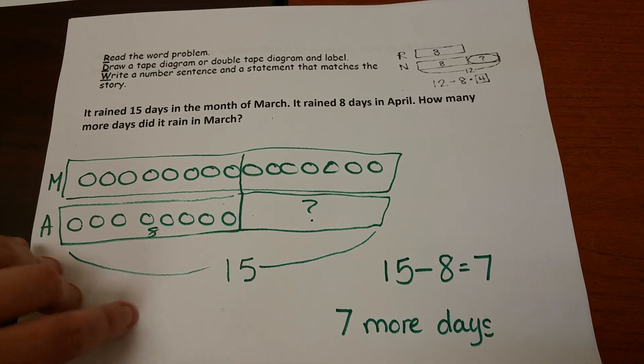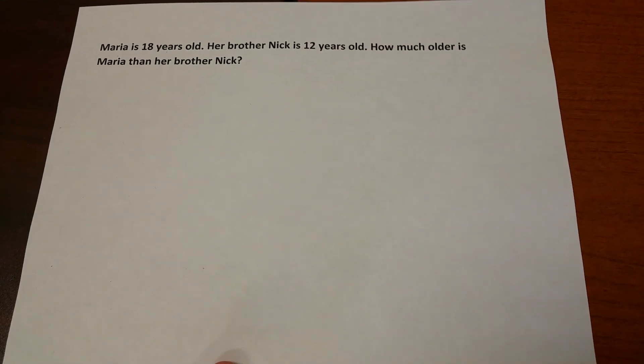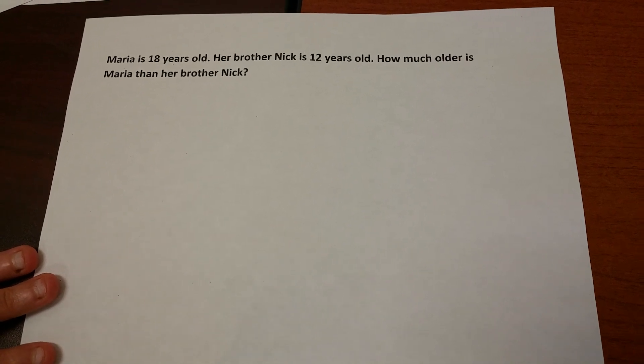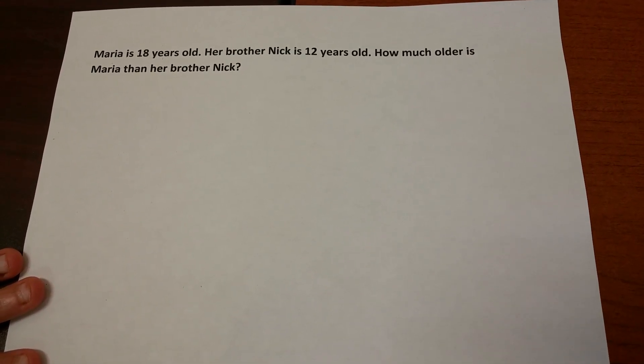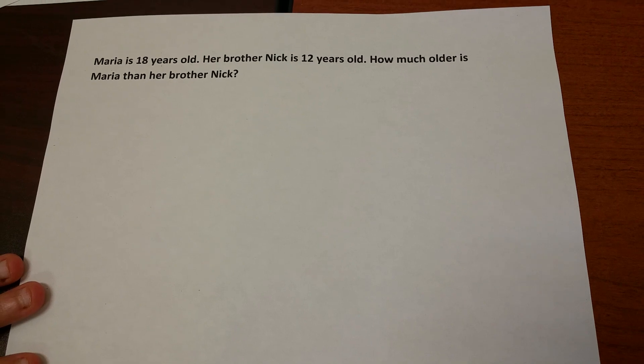Let's do it one more time. Maria is 18 years old. Her brother Nick is 12 years old. How much older is Maria than her brother Nick?